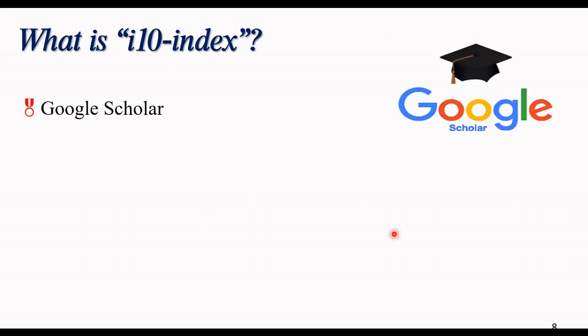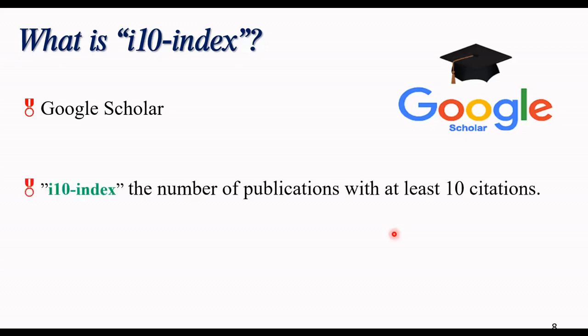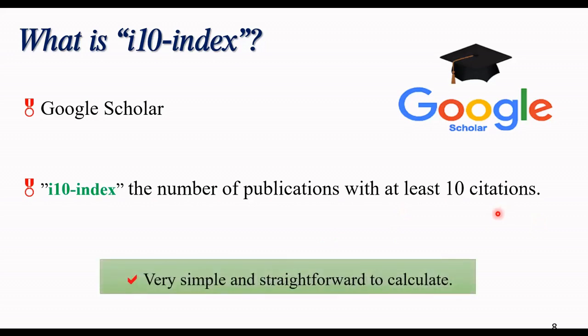From July 2011, Google have provided an automatically calculated H-index and i10-index with their own Google Scholar profile. This is very easy to calculate. We say that i10 is the number of publications with at least 10 citations. It's really easy to calculate, and it's really straightforward. It's not widely used at universities, but it is good beside the H-index for knowing better about activity of a researcher.